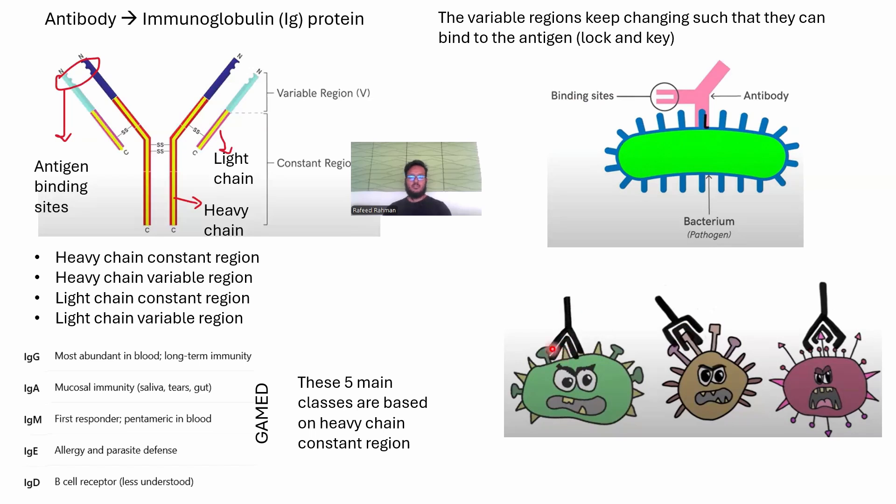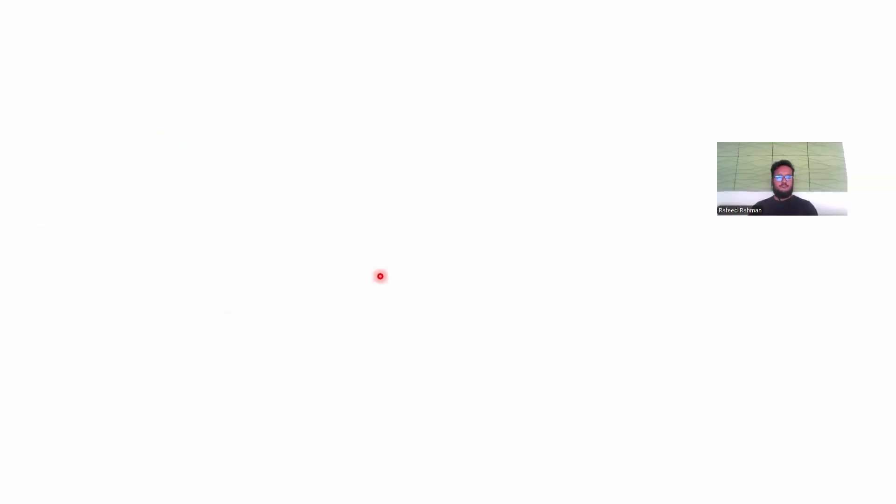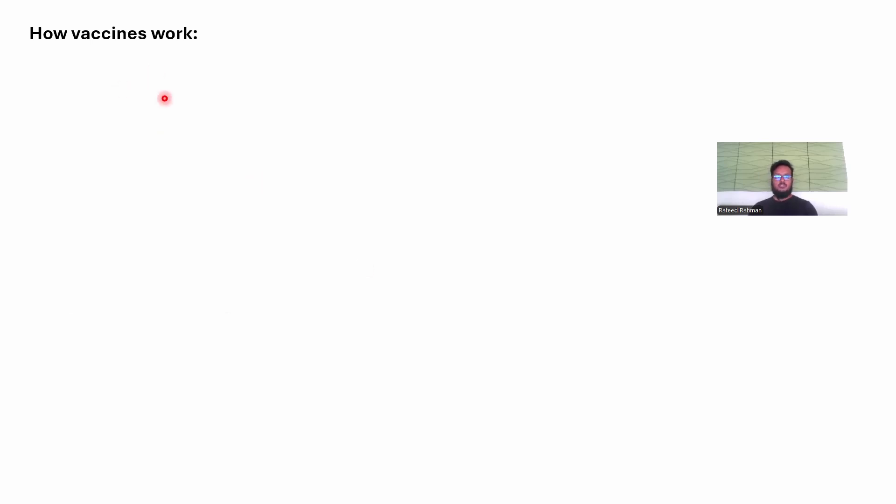How does vaccine work? A vaccine is a harmless form of a pathogen's antigen introduced into your body. It's not the pathogen itself, but a harmless version. For example, it can be a protein, killed or inactivated virus, or mRNA to make the antigen. The immune system recognizes the antigen and starts making antibodies. These antibodies will work when the real pathogen arrives. That's how vaccines work.